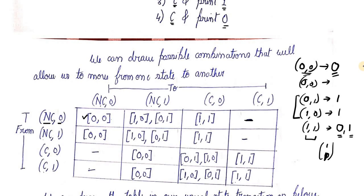Now we come to the scenario no carry, 1. No carry, 1 can happen only when we have done something like 0,1 or 1,0. We can remain in the same state by getting x values 1,0 or 0,1. We can go to no carry,0 only if we get 0,0. We can get to carry,0 by doing 1,1 as in the previous step. We can't go to carry,1 because we have no carry in the first place.